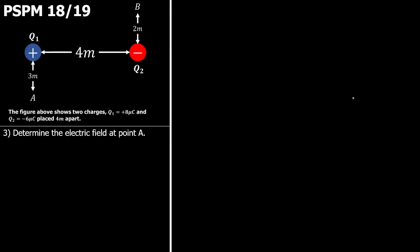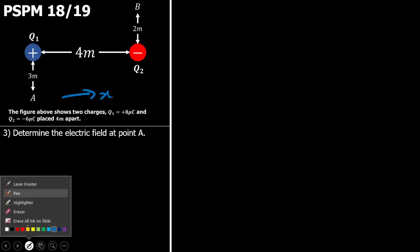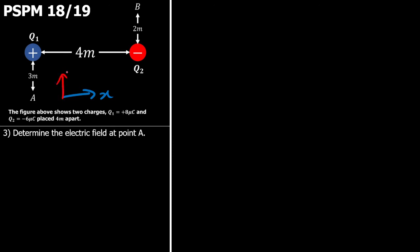Now the next question is on the determination of the electric field at point A. I know that this is axis-based, so let me just define the axis. In the left and right direction I'll call X, and the Y direction is up and down. I can easily calculate the magnitude of the electric field at any point using distances and the charges of the source.